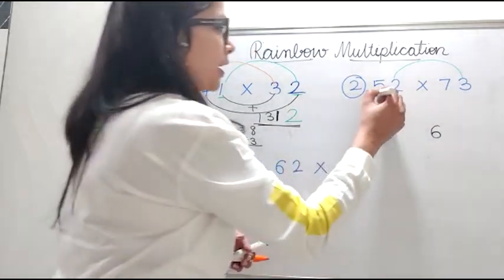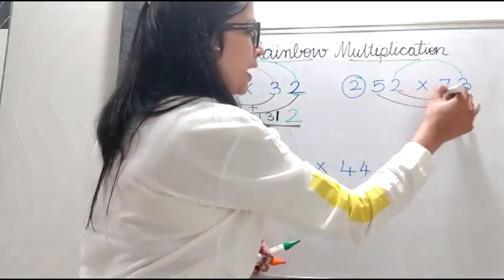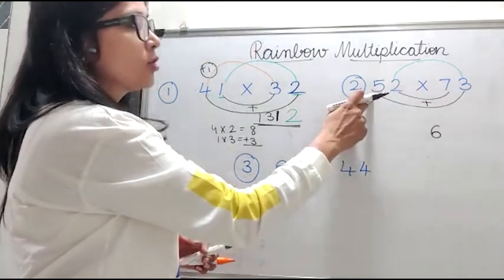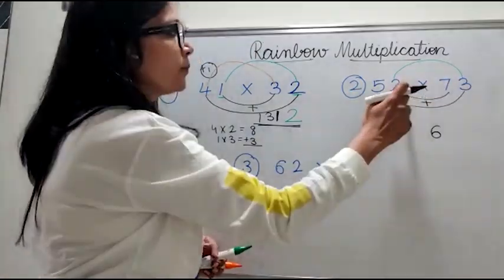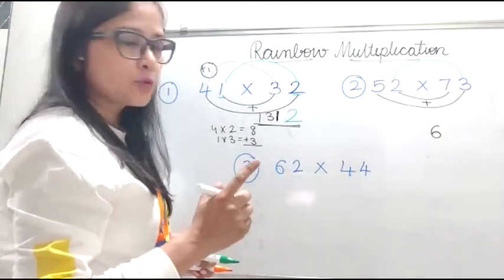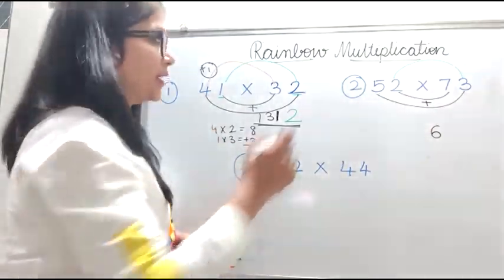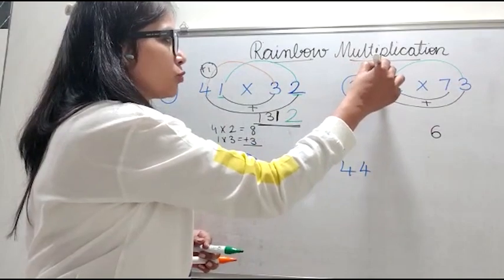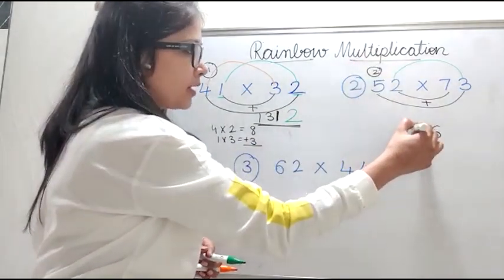My second step, I draw smiles and I add up my smiles. So five threes is 15. Seven twos is 14. So 15 plus 14 is 29. So I carry my two over here and write my nine over here.